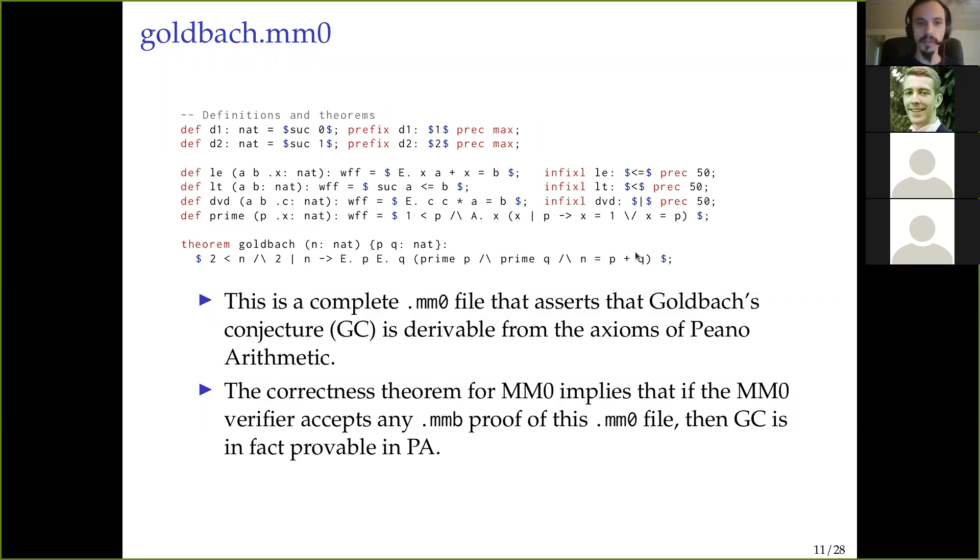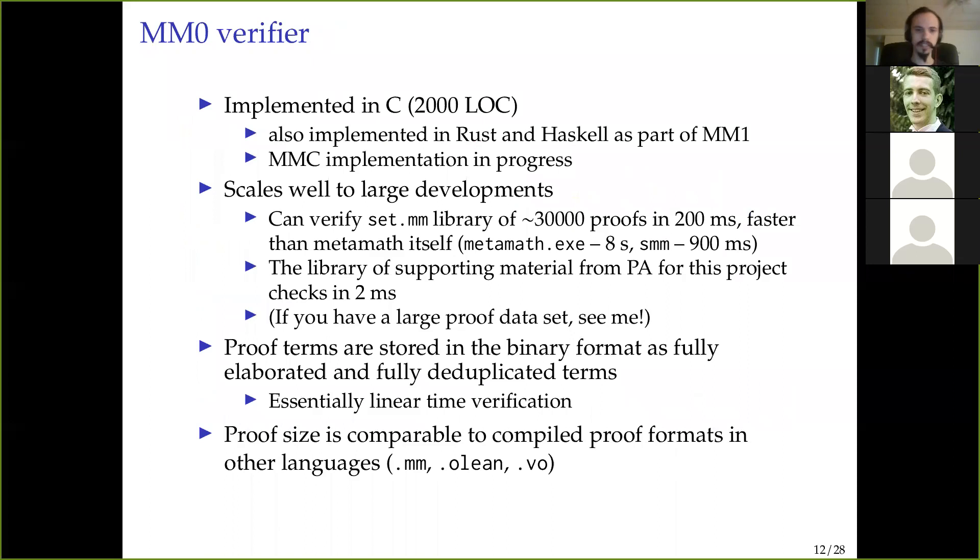And then finally, we can define a couple things. We define 1 and 2, define less equal, less than, divides, and primality. And now we can state the Goldbach conjecture. So, here, note the lack of proof. This is actually just the statement of the theorem that we'd like to be true. So, this is a complete MM0 file. It's about 60 lines. And it asserts that Goldbach's conjecture is derivable from the axioms of Peano arithmetic. As you saw, we basically built everything up from scratch.